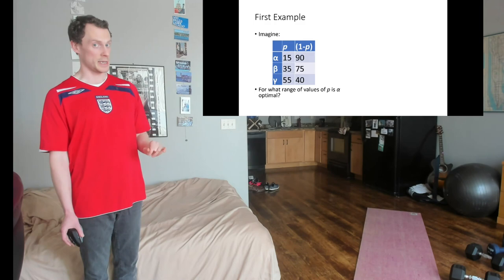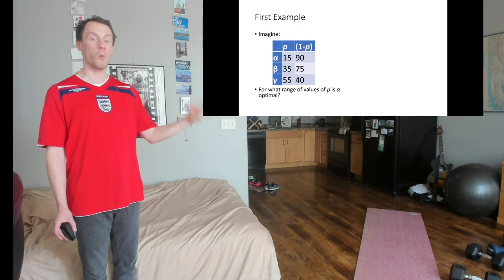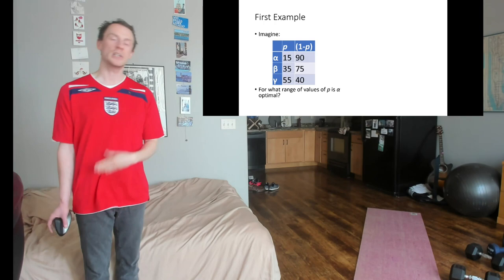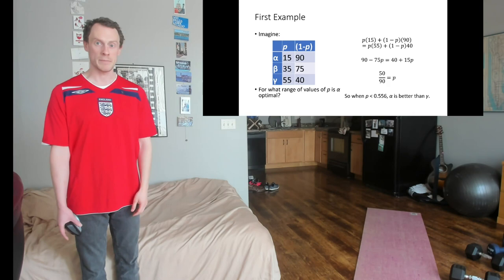So you could plug those values in and just work out for every possible value of P what's the best lottery. So if P is 0.5, then what's the expected utility of alpha? What's the expected utility of beta? What's the expected utility of gamma? But there is actually a quicker way to do it. And that's what we're going to talk about today.